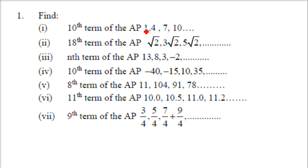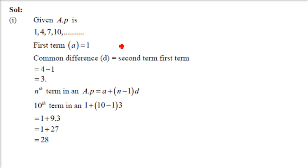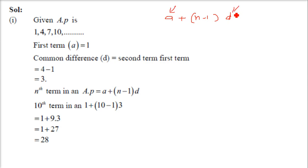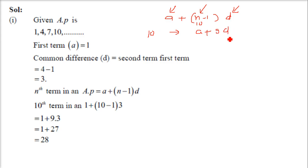Find the 10th term of the AP. To find the nth term or 10th term, since we have an AP, the nth term will always be A plus N minus 1 into D. Here A is the first term, D is the common difference, and N is the number of the term. To find the 10th term, we replace N by 10, so the 10th term will be A plus 9D.